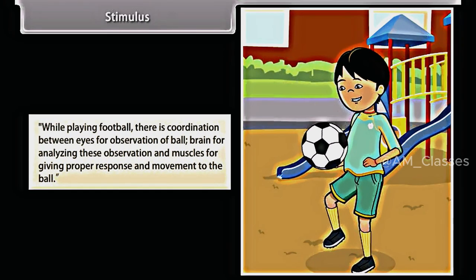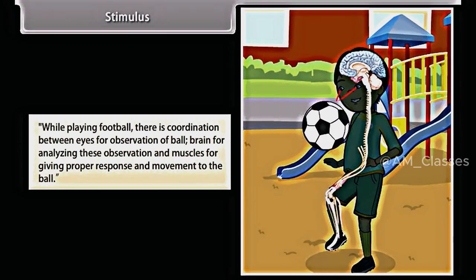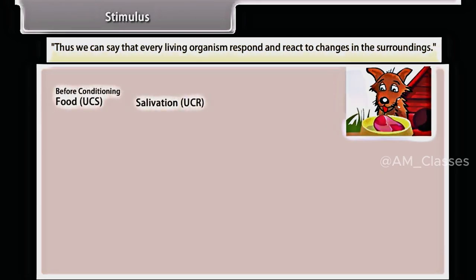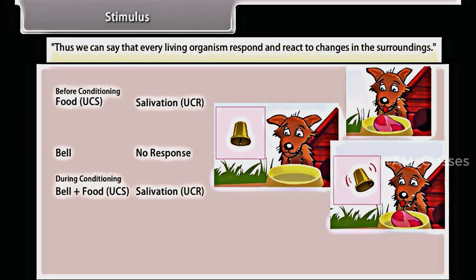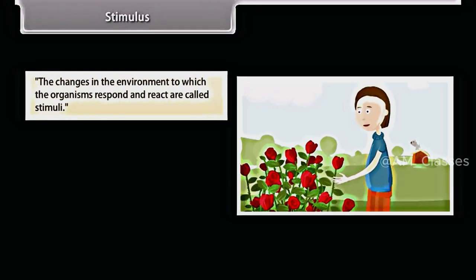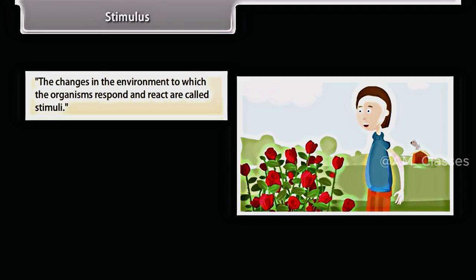While playing football, there is coordination between eyes for observation of the ball, brain for analyzing these observations, and muscles for giving proper response and movement to the ball. Thus we can say that every living organism responds and reacts to changes in the surroundings. The changes in the environment to which the organisms respond and react are called stimuli.